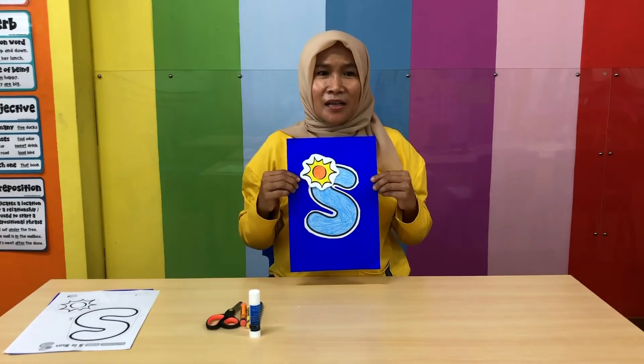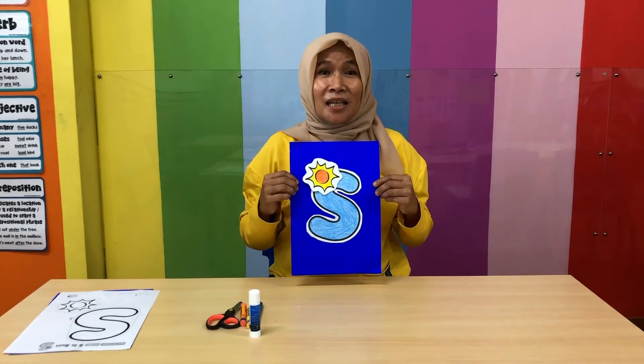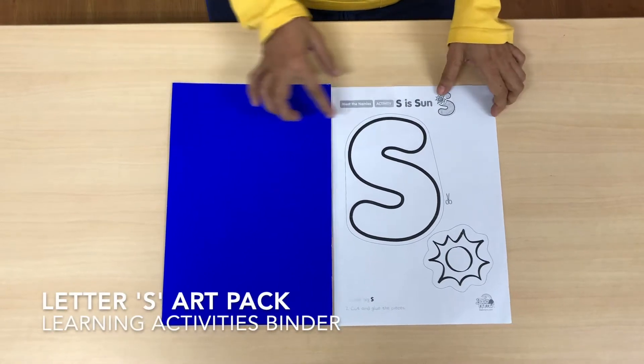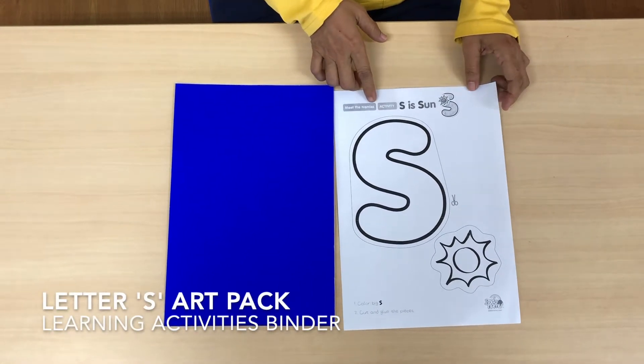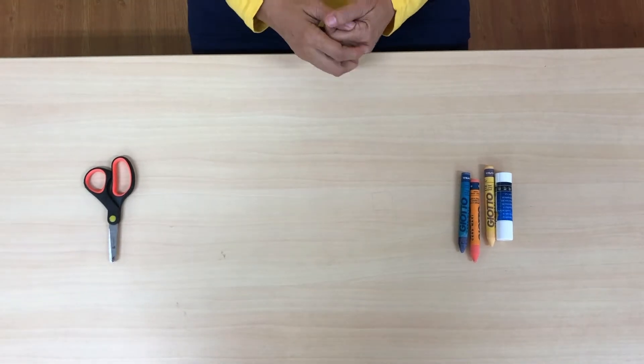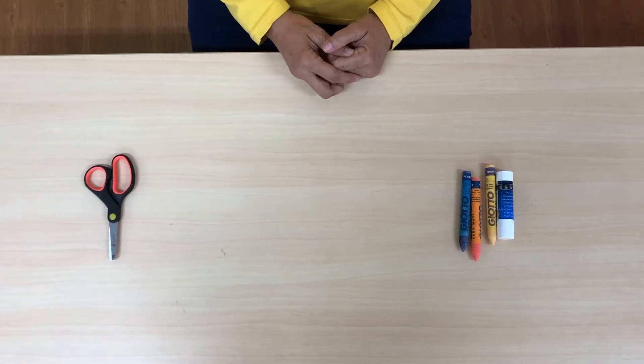Let's begin the art project making letter S. Now I will tell you about materials that will be used from the learning activities binder. The next materials are from basic materials in the learning kit.